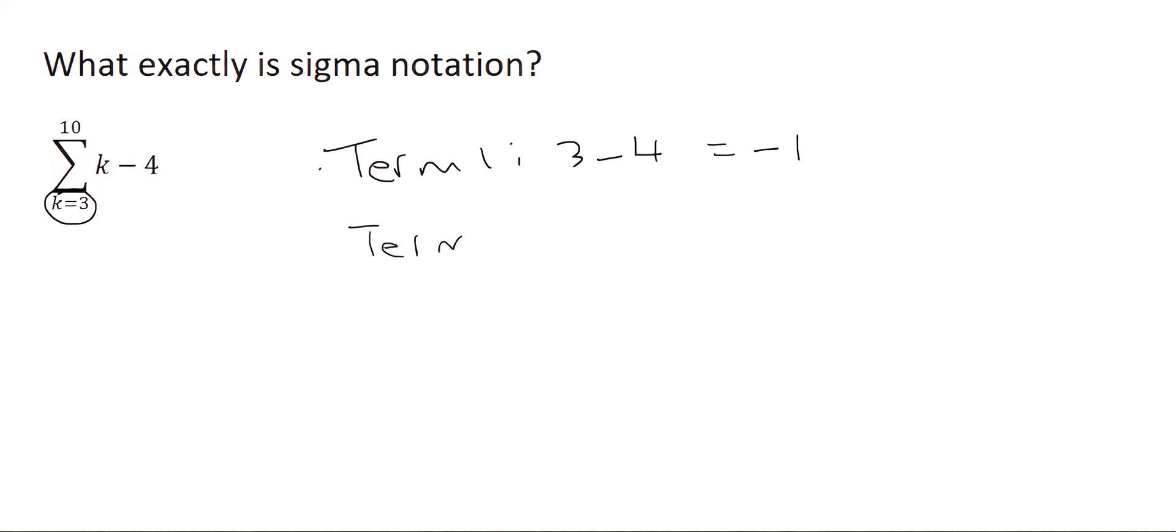To find term 2, then you have to plug in the new value for k, which goes up by 1, so that's going to be 4 minus 4 now, and that's 0. Then to find term 3, k now becomes 5, so it's 5 minus 4, which is 1.